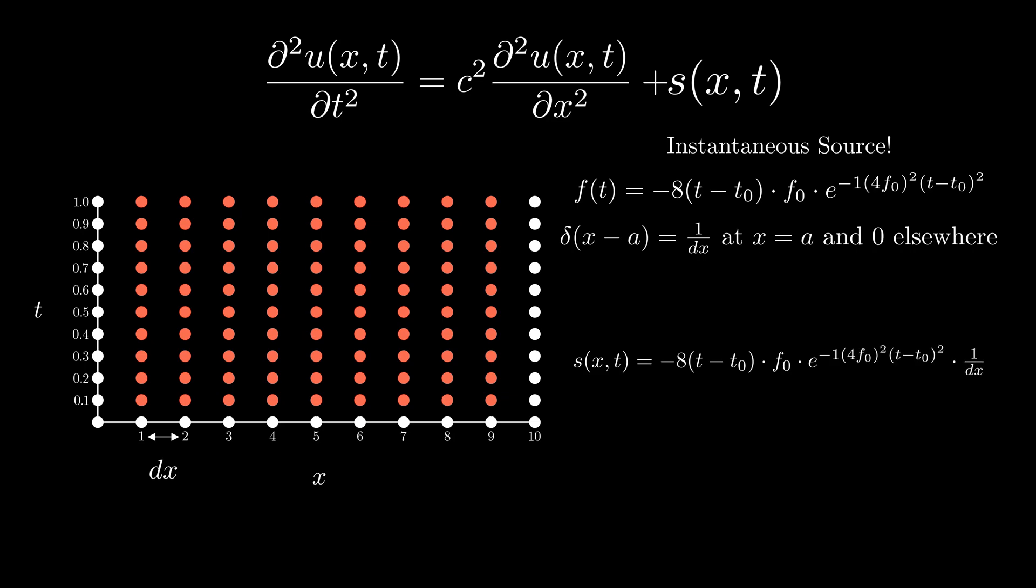Now, with the functional form of the source, we can just evaluate it at a specific grid point. For example, if I want to place a source at, say, x is equal to 9 meters, I would just evaluate the source function at this location.